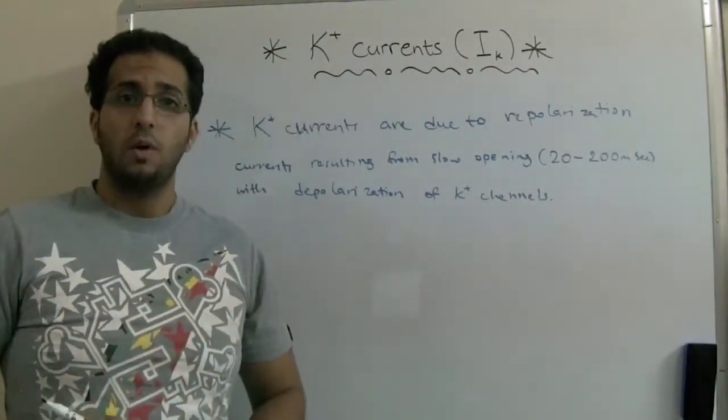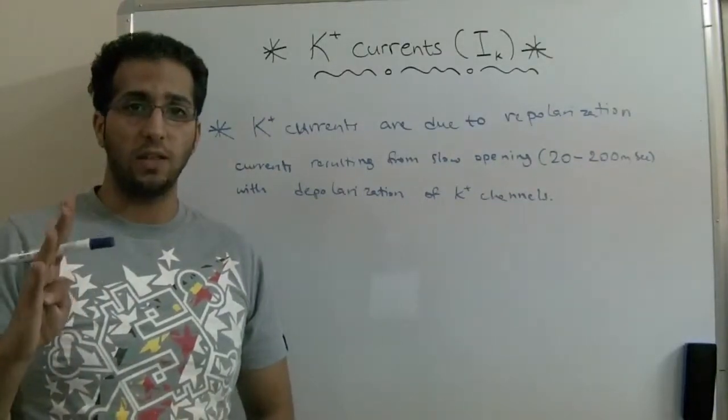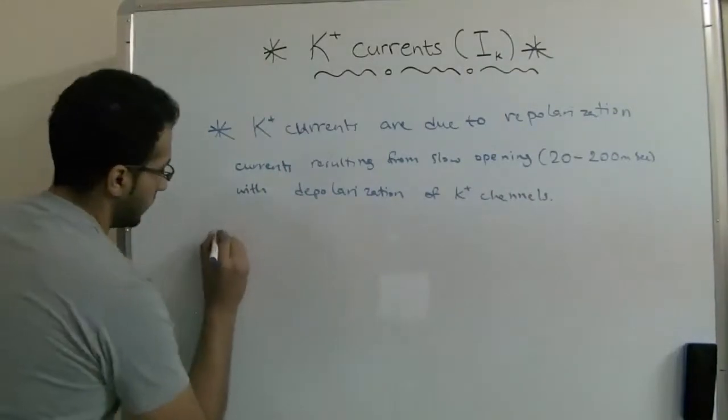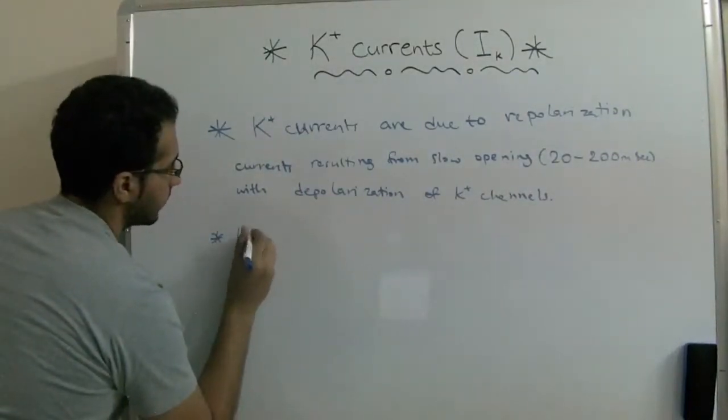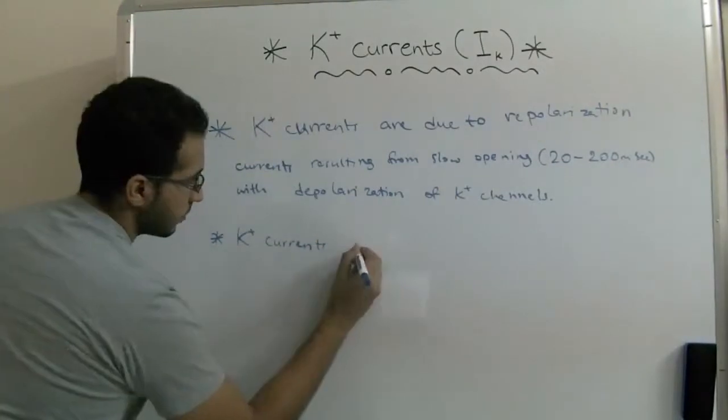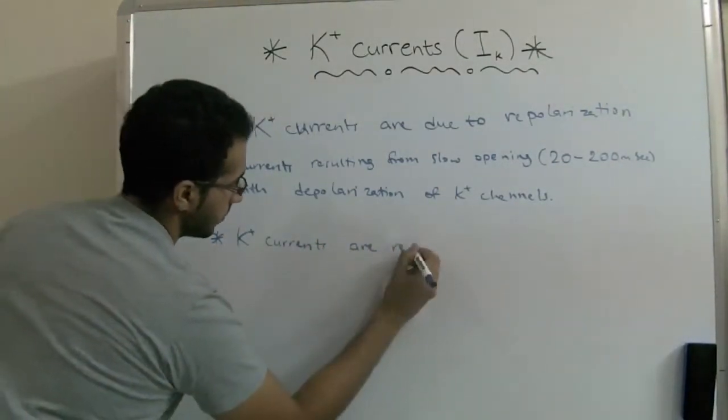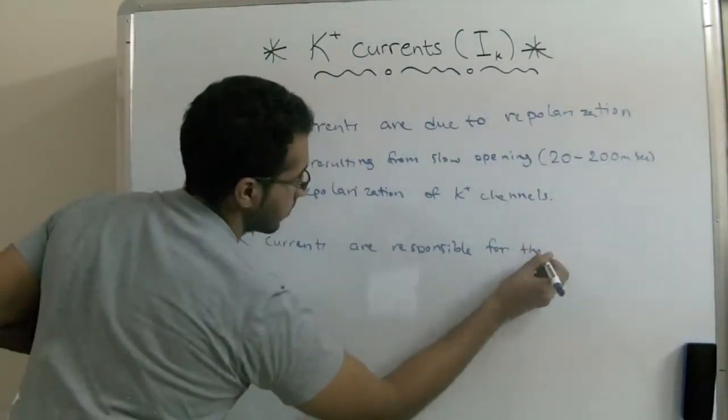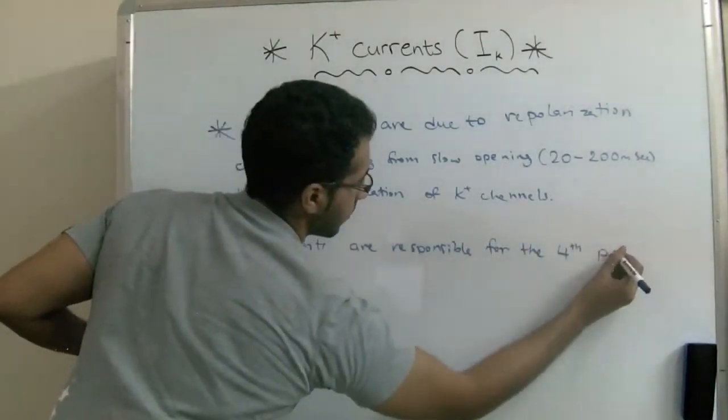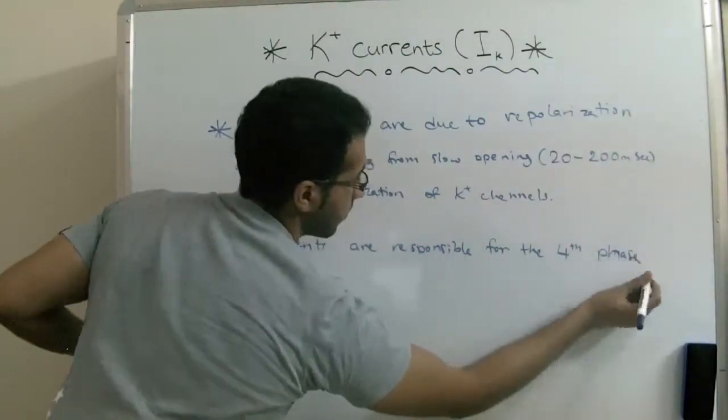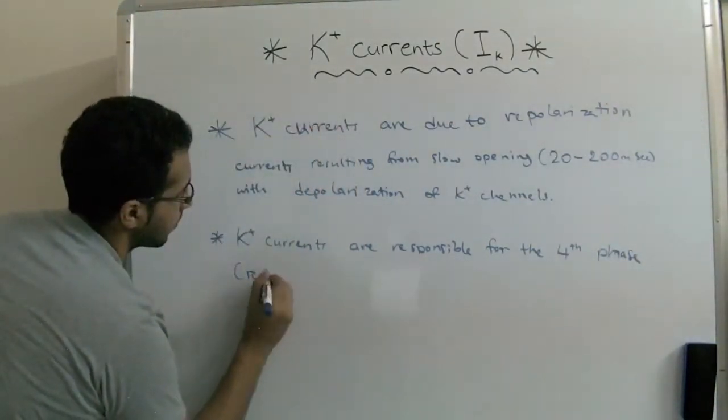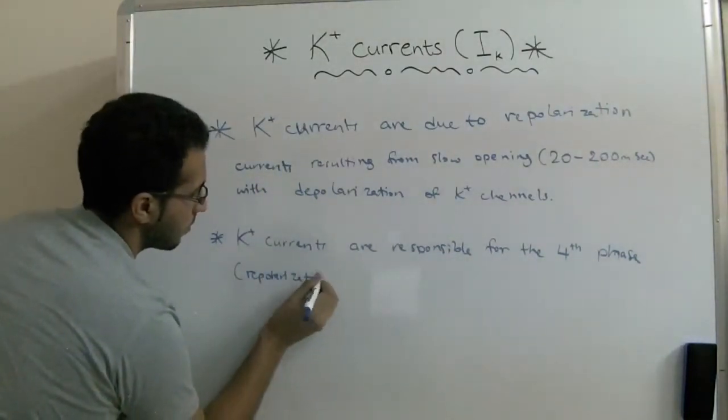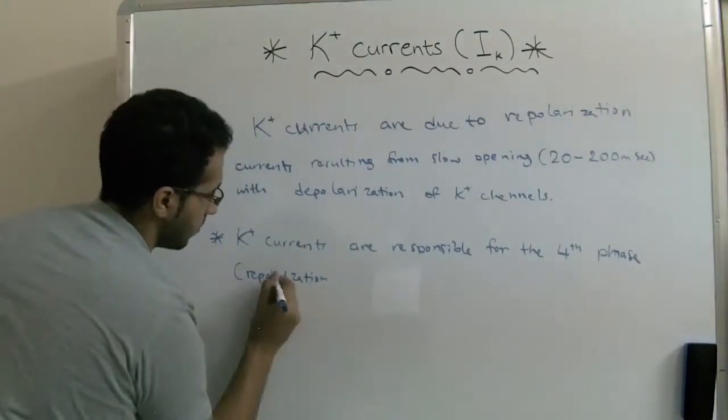Potassium currents are responsible for the fourth phase of the action potential, which is the repolarization phase.